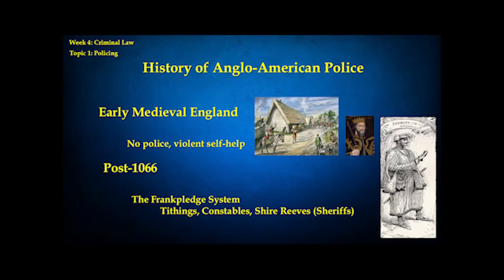Overseeing these tithings were officials called constables. For every 10 tithings, you had a constable who was in charge of regulating them all. These constables over time evolved into the main legal official who kept order in urban areas — the towns and cities. For every 100 tithings, you had an official called a reeve, a shire reeve, which eventually evolved into our word sheriff. The sheriff evolved into the main legal official charged with overseeing things at the level of the county.